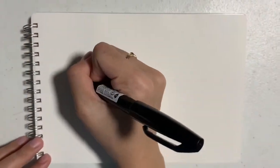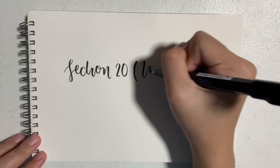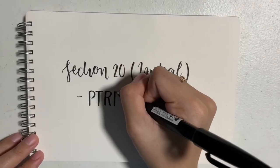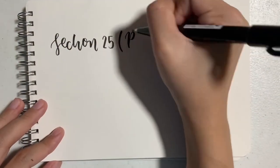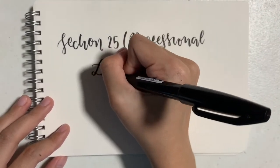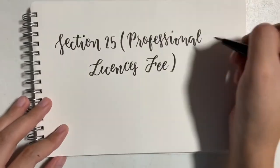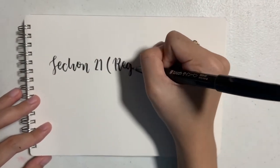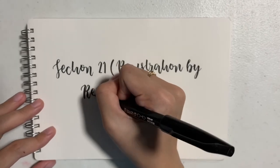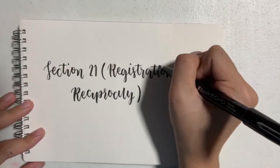Section 20, Initials: the initials PTRP, which stand for Physical Therapist Registered Philippines, may be added after the name of the physical therapist who successfully passes the examination given by the board. Section 25, Professional License Fee: a registered physical therapist shall pay a professional license fee of 50 pesos per annum, payable annually or semi-annually. Section 21, Registration by Reciprocity: if one is holding a valid certificate of registration issued under the laws of a foreign country, she or he may practice in the Philippines without passing the examination here, given that the requirements and privileges are the same as in the Philippines.